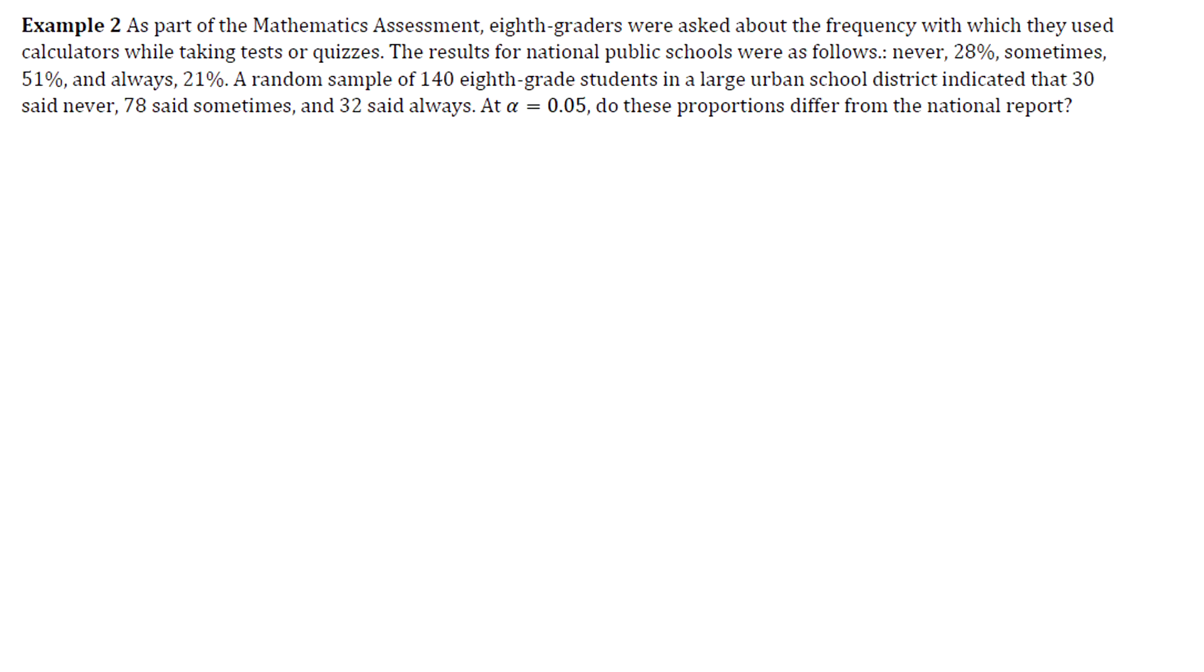In the last video we looked at how to handle the situation when the expected values of the categories are equal. Now we're going to see how that process slightly changes when we expect those values to be unequal to each other.